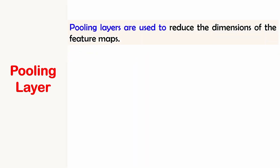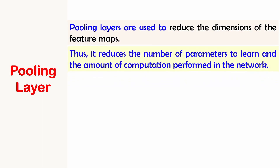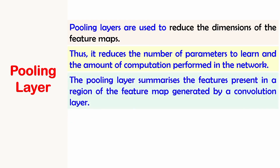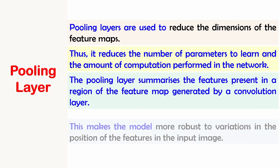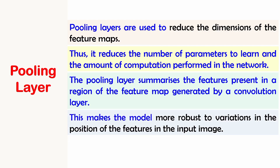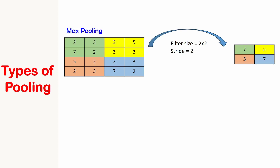Having seen activation functions, let us now see the significance of the pooling layer and its types. Pooling layers are used to reduce the dimensions of the feature maps, thus reducing the number of parameters to learn and the amount of computation in the network. The pooling layer summarizes the features present in a region of the feature map generated by a convolution layer, making the model more robust to variations in feature position. There are two types: max pooling and average pooling.